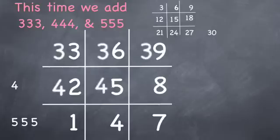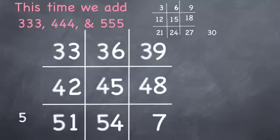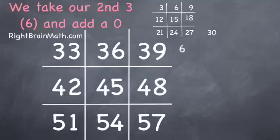Fours in front of the two, the five, and the eight, fives in front of the one, the four, and the seven. Then we take our second three after the second square, drop it down, that's six, add a zero after it, and that is sixty. That is our twentieth three.